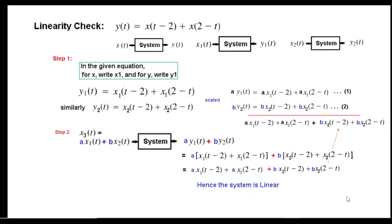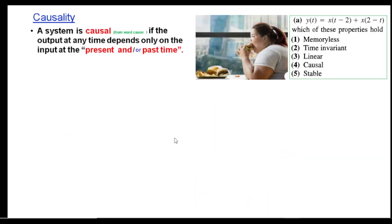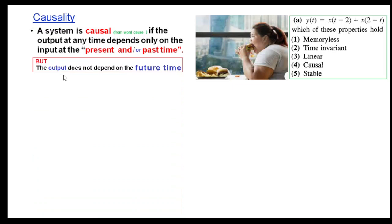The system is linear, which matches the solution manual. Now we check causality. A system is causal if the output at any time depends only on the present input and/or past inputs, but not on future inputs. Using the everyday analogy: eating more causes weight gain, but we cannot say someone is overweight because of burgers they will eat six months from now.